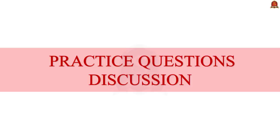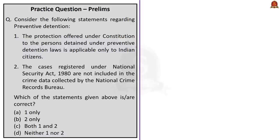Now let us move on to the practice questions discussion session. This question is about preventive detention. Statement 1 says the protection offered under the Constitution to persons detained under preventive detention laws is applicable only to Indian citizens. This statement is incorrect — as per Article 22, it is applicable to Indian citizens as well as aliens. Statement 2 says that cases registered under the National Security Act of 1980 are not included in the crime data collected by the National Crime Records Bureau. This statement is correct. So the correct answer is option B, statement 2 only.